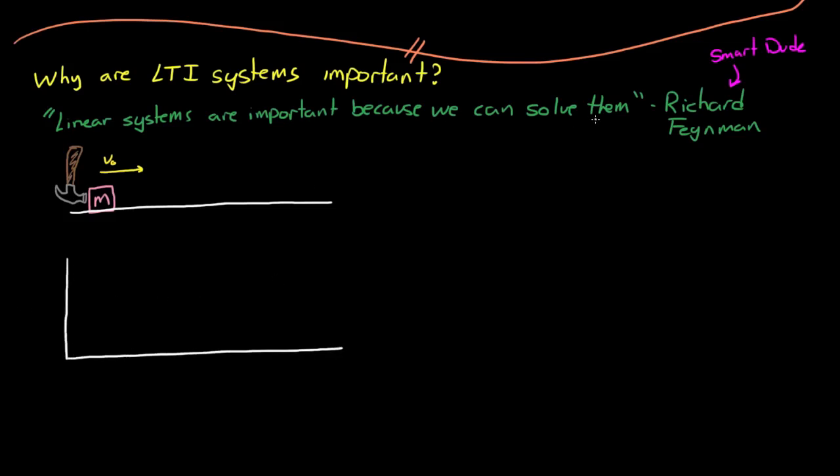And then you observe the response, we would say this is the impulse response of the system. And if there was friction between the mass and the table, then the response might look something like this. Because of the principle of time invariance, we know that if we hit the mass with a hammer at time 0, and then we hit it again at time 1, we can expect the same response at both times.